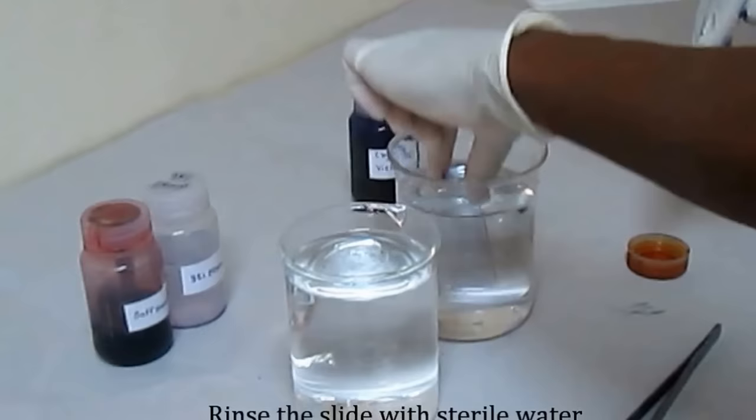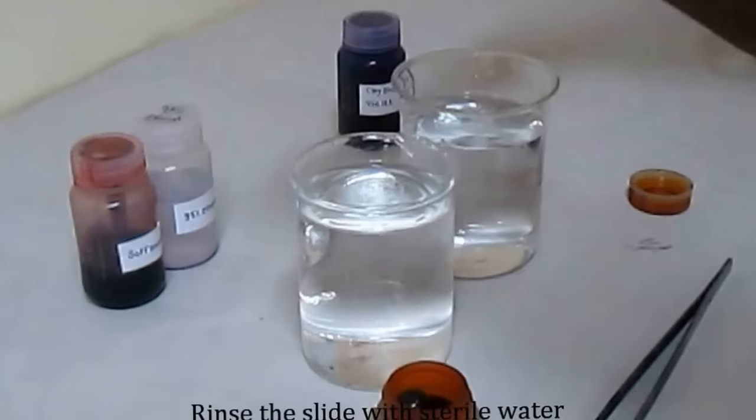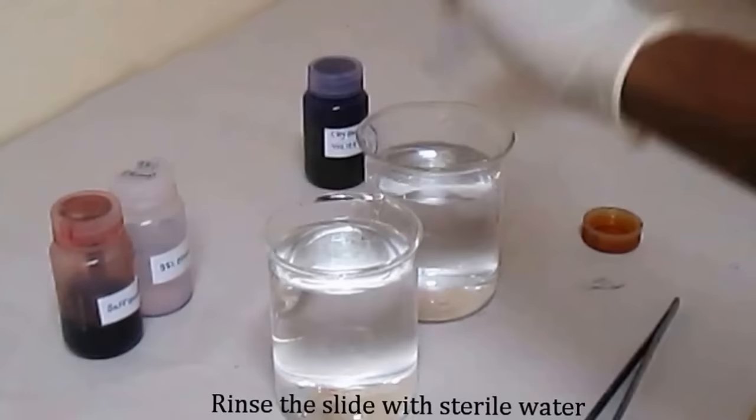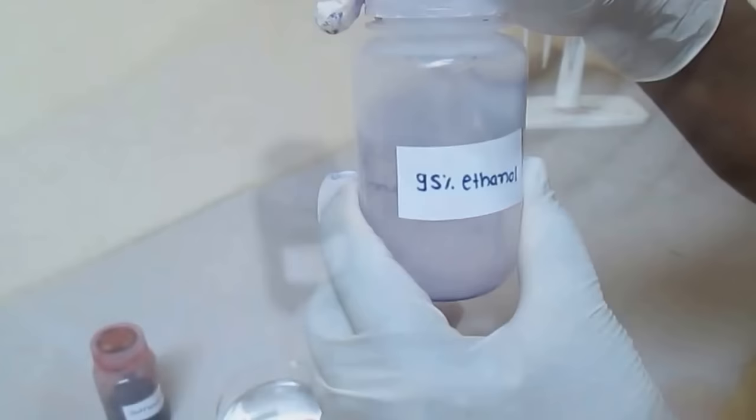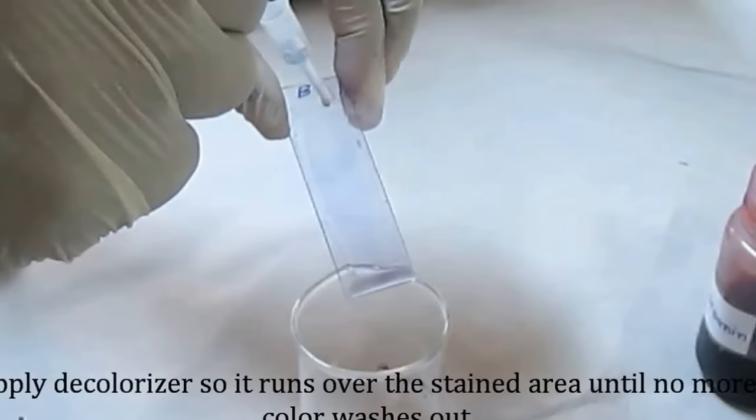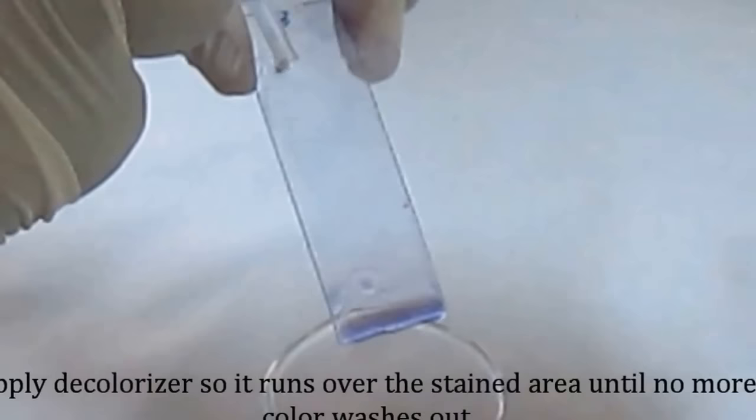Apply the 95% Ethanol as a decolorizer. Run it over the stained area at 45 degree angle until the flow is clear. Check the flow at the base or end of the slide.